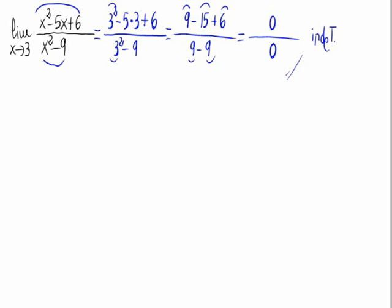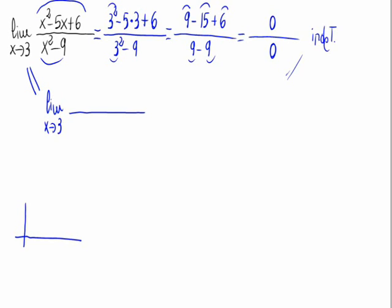So, now to obtain the limit's value, we copy the limit when x tends to 3, and we have to separate this into factors to see if we can simplify. For x squared minus 5x plus 6 we do Ruffini. We use 3 because x tends to it. The coefficients of x squared minus 5x plus 6 are 1, minus 5, and 6.